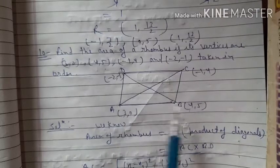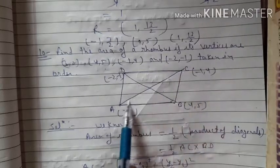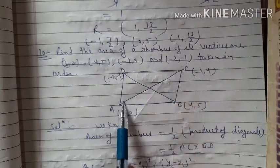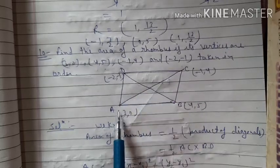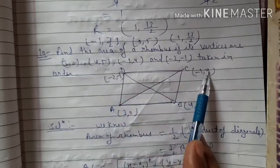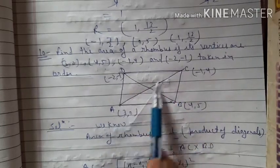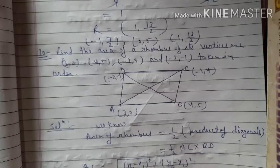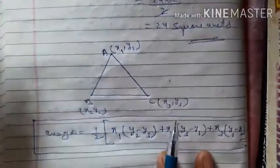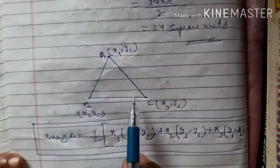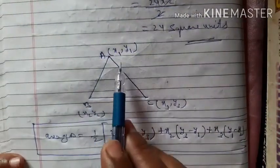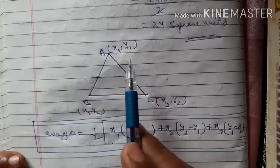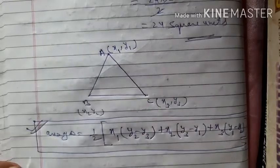Substituting coordinates into this formula gives area of triangle ABC. Similarly, for triangle ACD using its x1,y1,x2,y2,x3,y3 values, we get area of ACD. Adding both gives area of the quadrilateral ABCD. For a simple quadrilateral you don't know a direct formula, so distribute into two triangles, find areas separately, and add.